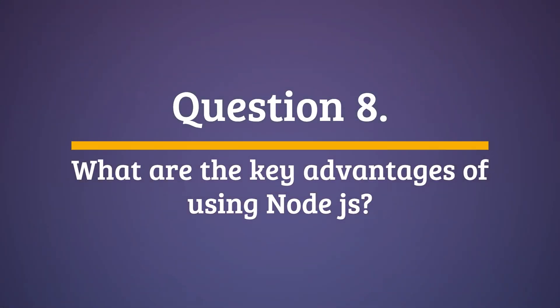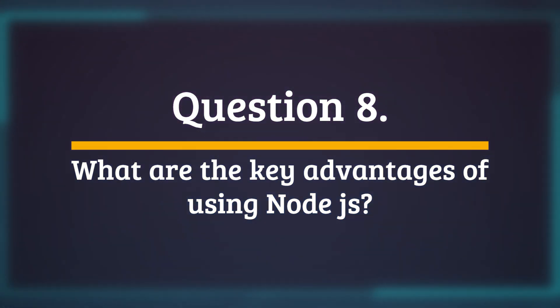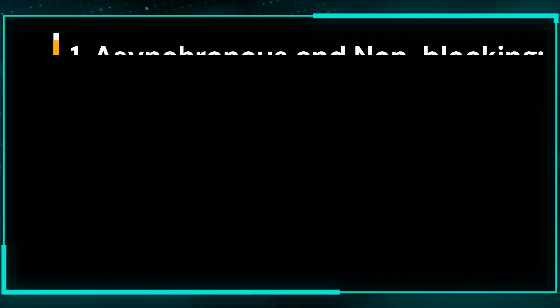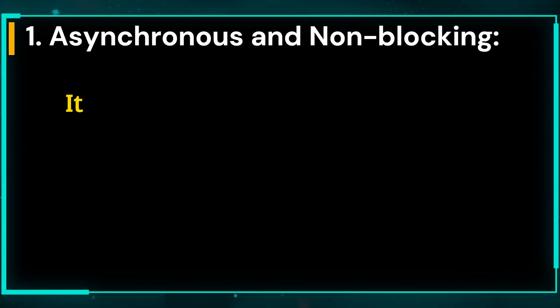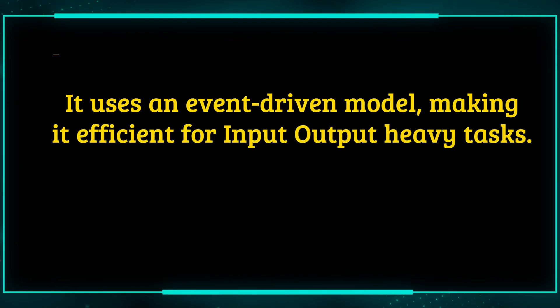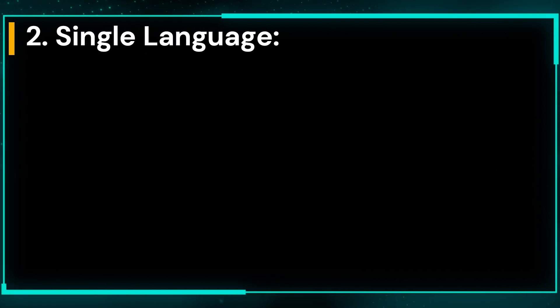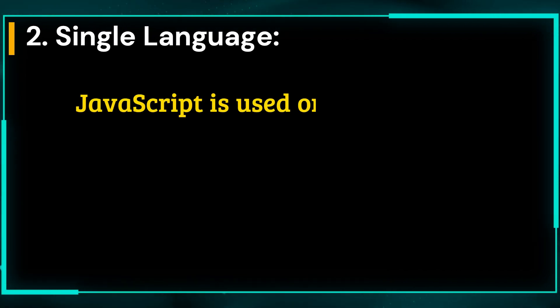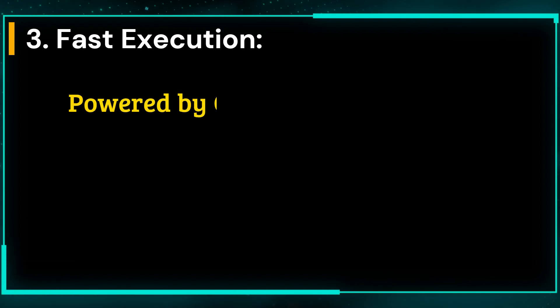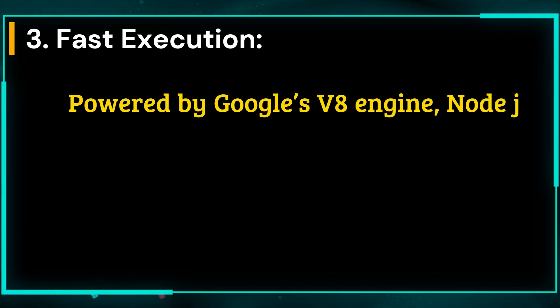Question 8. What are the key advantages of using Node.js? Answer. Node.js offers several key advantages. 1. Asynchronous and non-blocking: it uses an event-driven model, making it efficient for input-output heavy tasks. 2. Single language: JavaScript is used on both client and server, allowing full-stack development. 3. Fast execution: powered by Google's V8 engine, Node.js executes JavaScript quickly.